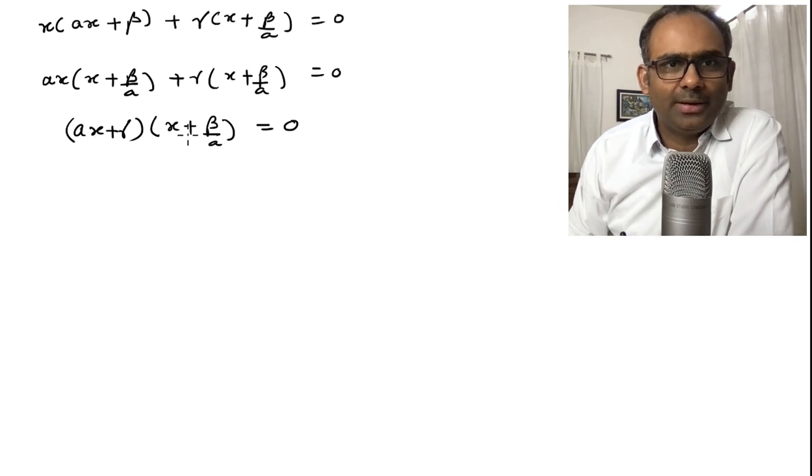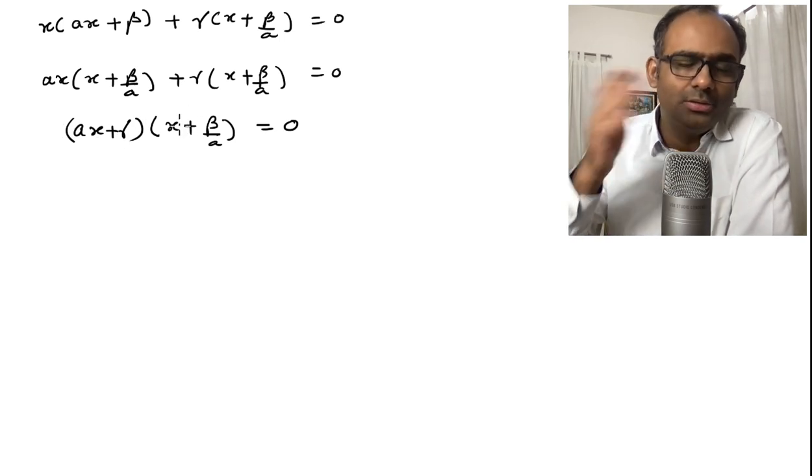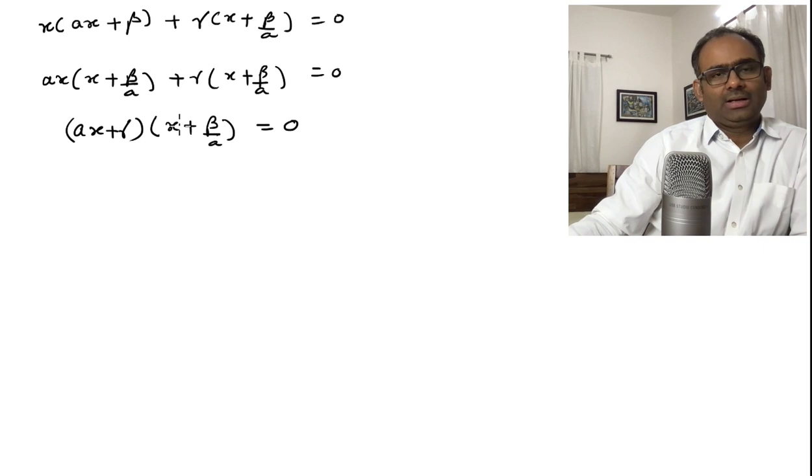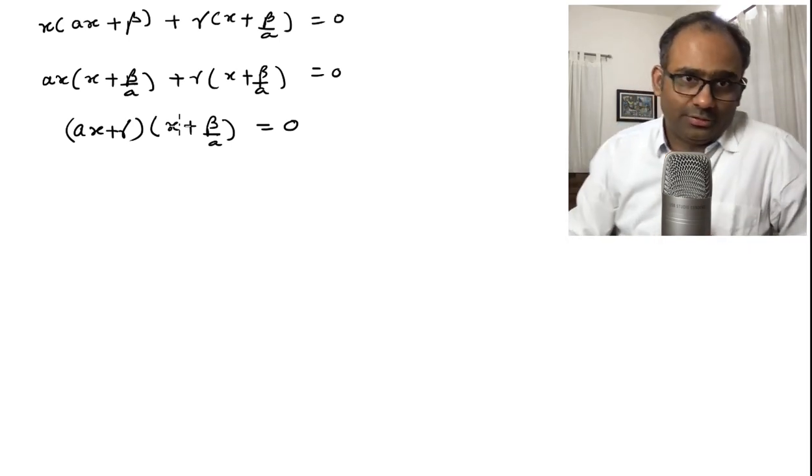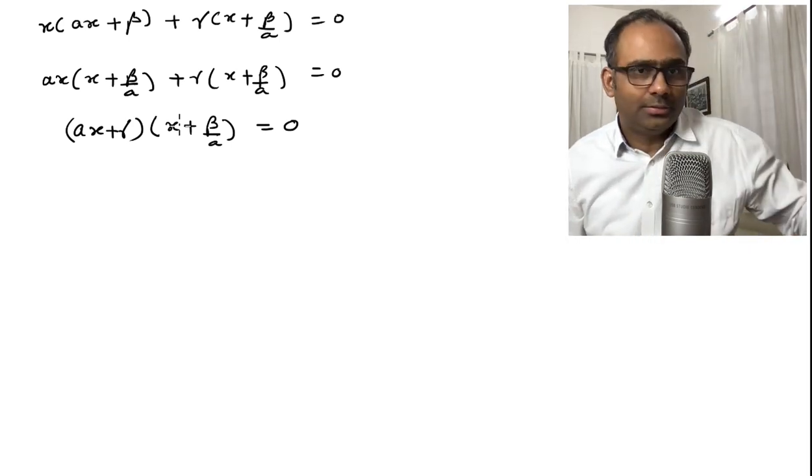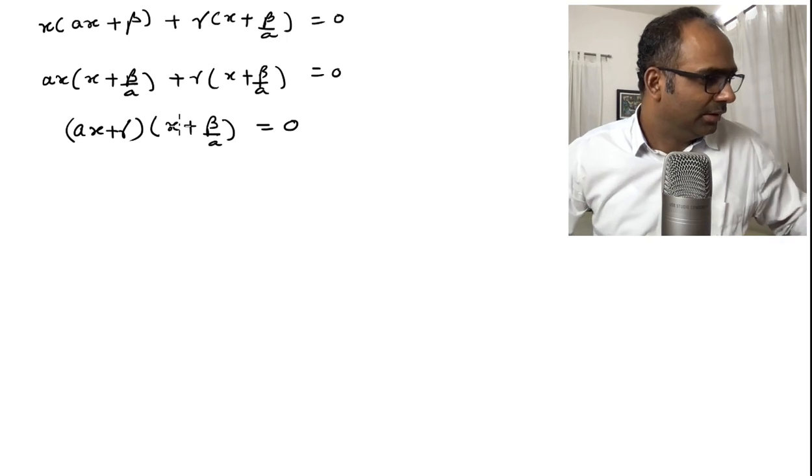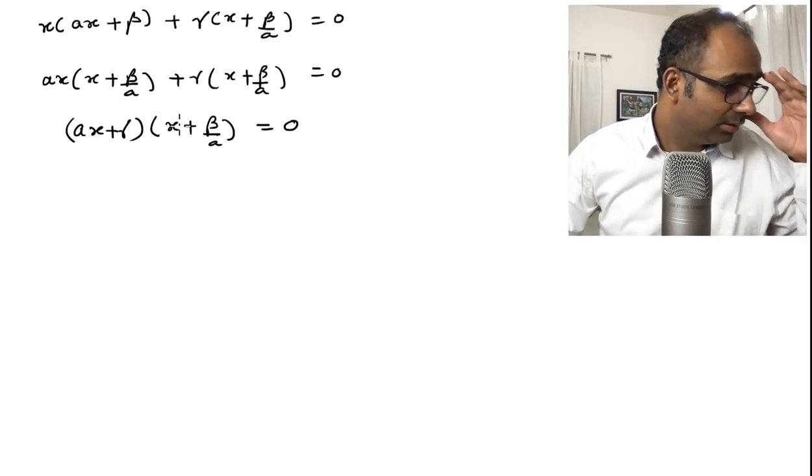Now, you see if you multiply these it generates a term ax square that is and then of course you have to use the definitions of beta and gamma to go back to a and b and c coefficients. Now, this is all good.